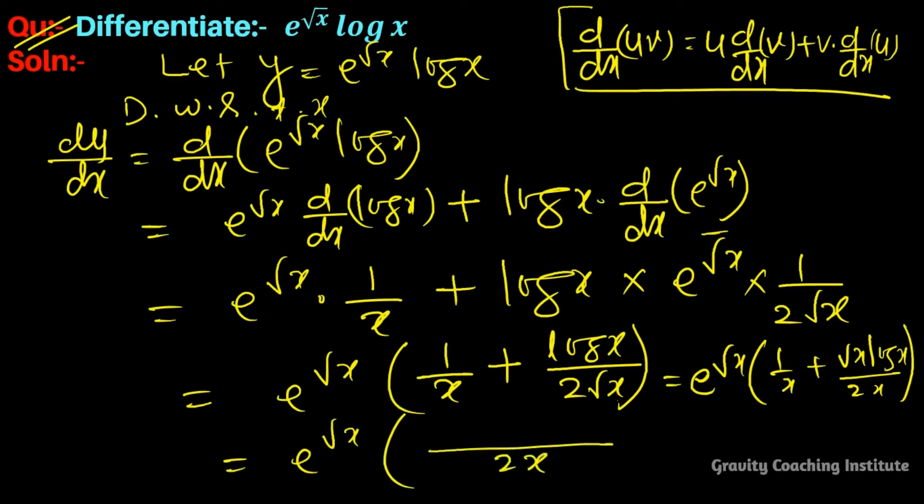And now we take LCM of x and two x. So equal to e to the power root x, and the denominator is two x, and the numerator is two plus root x log x, which is our required answer.